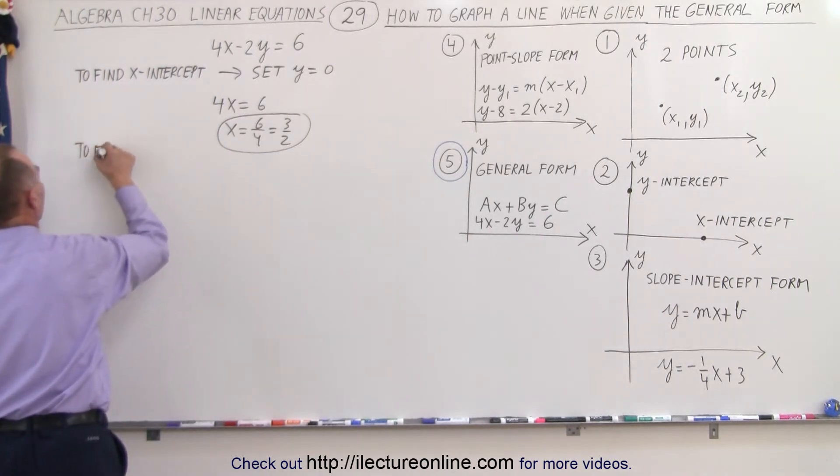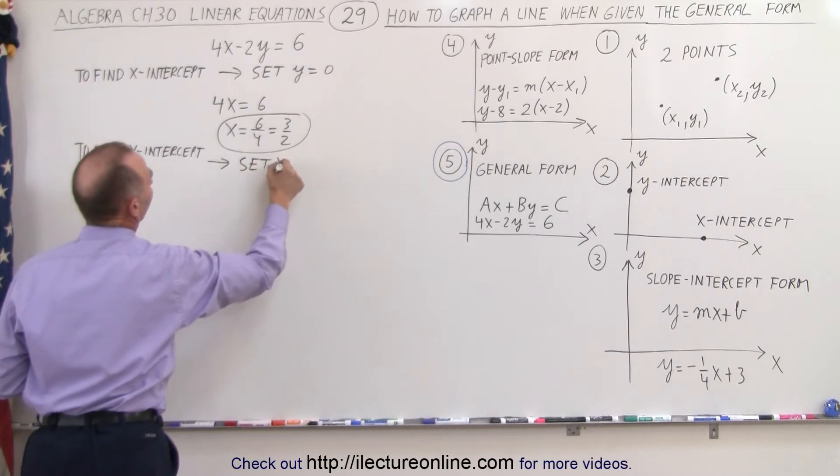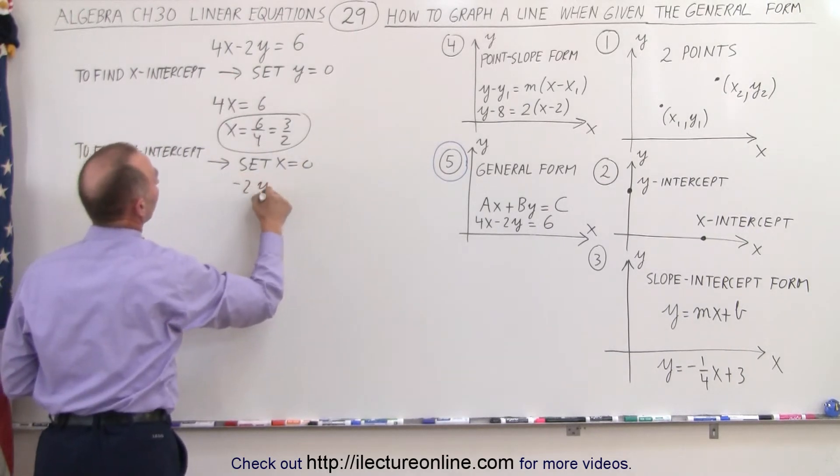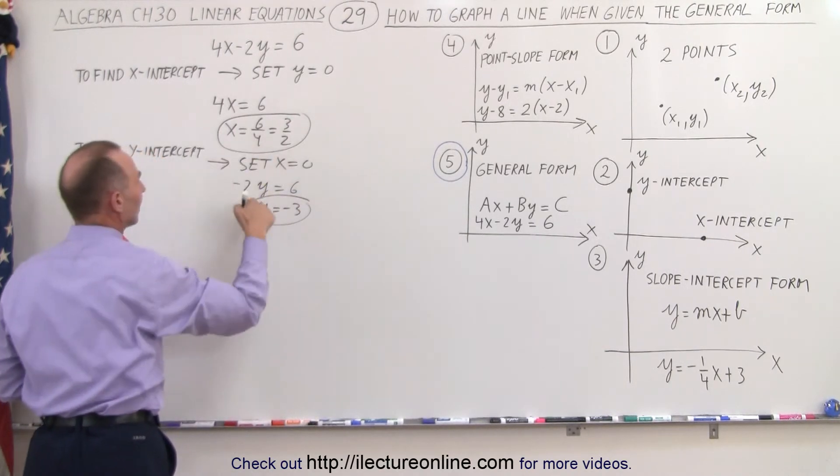And to find the Y intercept, we set X equal to 0. And if we do that, we get minus 2Y equals 6, or Y equals negative 3. So there we have the X intercept and the Y intercept.